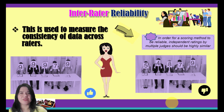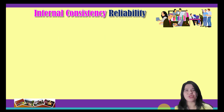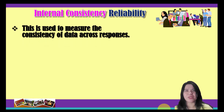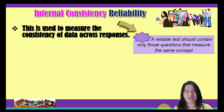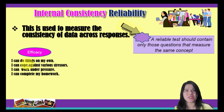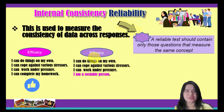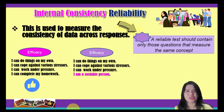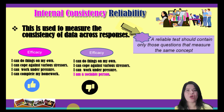The most common type is internal consistency, used to measure the consistency of data across responses. We are looking at different questions that measure the same construct. A reliable test should contain only questions that measure the same concept. For example, if we want to measure students' efficacy, all statements should measure that same concept. However, if the last statement measures sociability instead of efficacy — since a person high in sociability does not necessarily have high efficacy — that last item will tend to decrease the reliability of the construct.